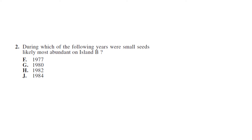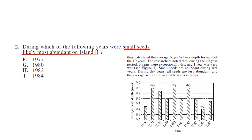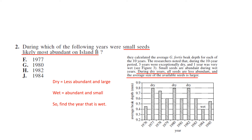Question two: during which years were small seeds likely most abundant on Island B? This one's tricky because the reading states that during dry years, all seeds are less abundant and the average size is larger. So dry years mean less abundant and large seeds — that means wet years are abundant. We're looking for the most wet year, which is 1984. So the answer is J — tricky question, not hard, just a little time consuming.